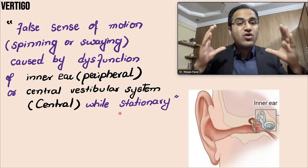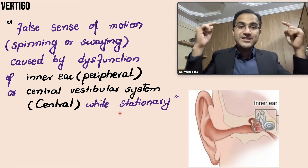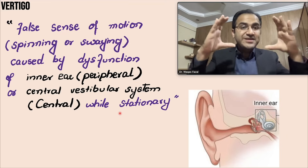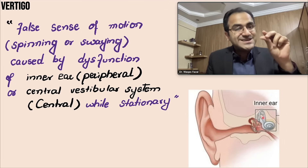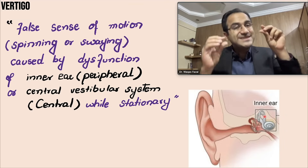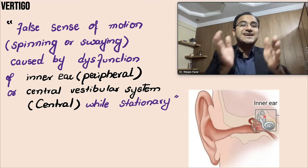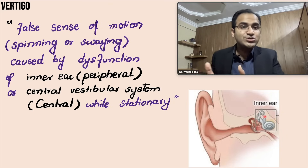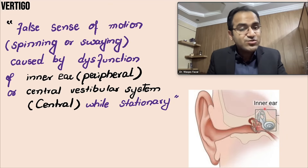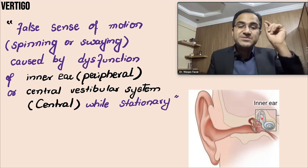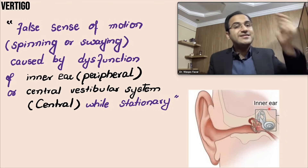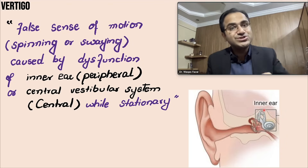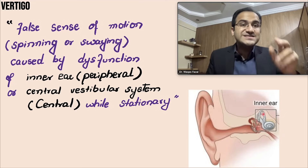Normally the sense of balance is maintained by the brain, and the brain receives signals from the inner ear vestibular system. That vestibular system detects whether the person is at rest or in motion and tells the brain accordingly. For example, when the person is driving, the inner ear tells the brain that the person is in motion.